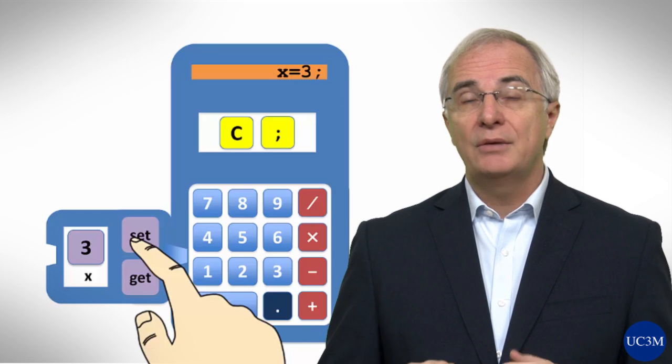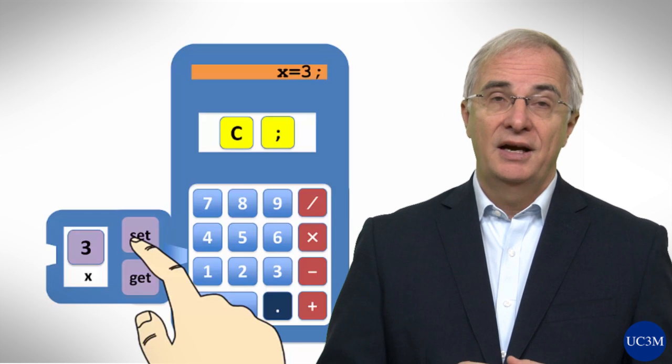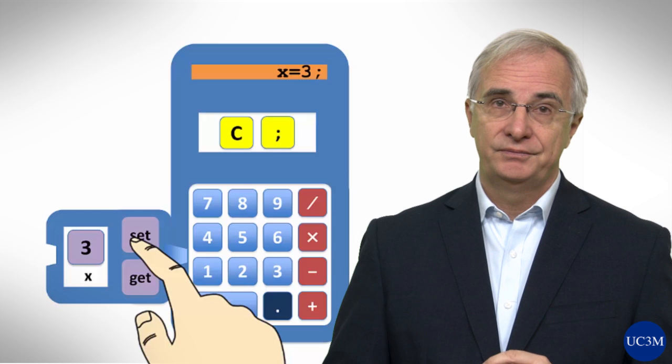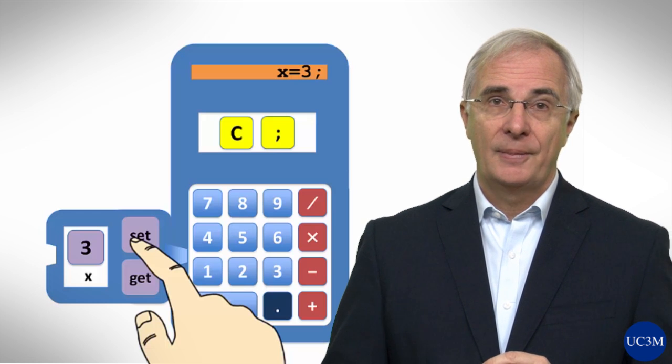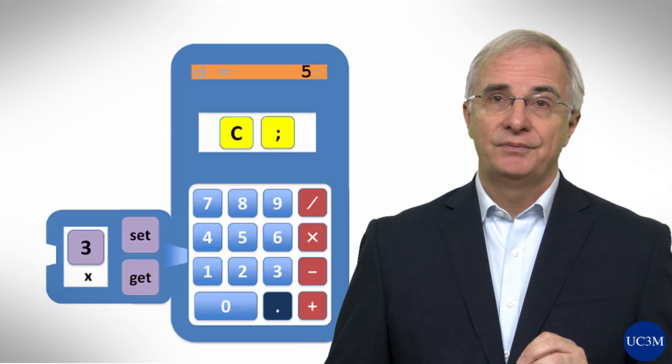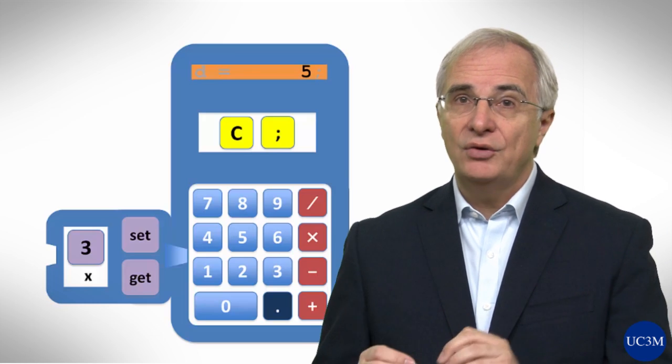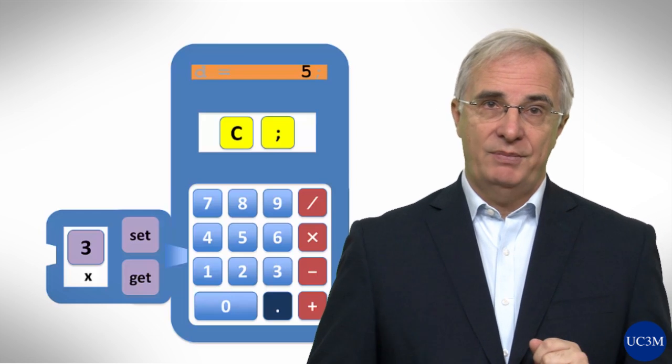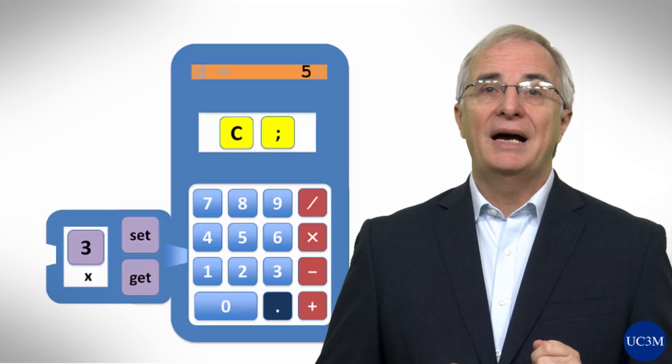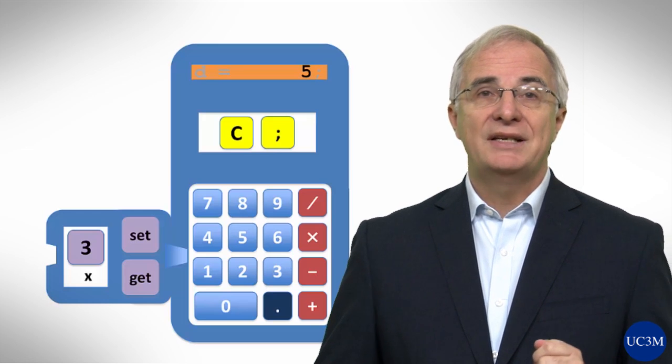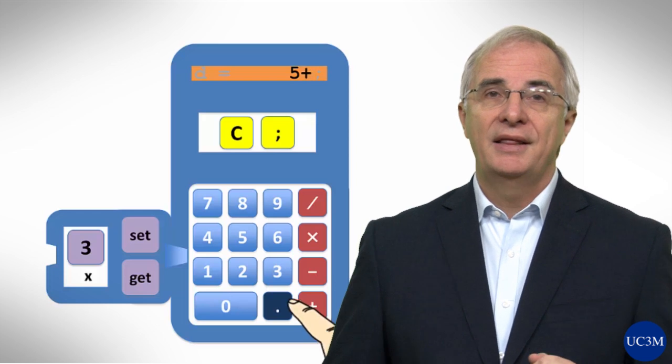We say that we have assigned 3 to variable x and we call this x equal 3 an assignment statement. Once we have set a value in a variable, we might use this value in expressions. For example, imagine we have a 5 on the display and want to add the value of x. We would press the plus symbol and then get x.